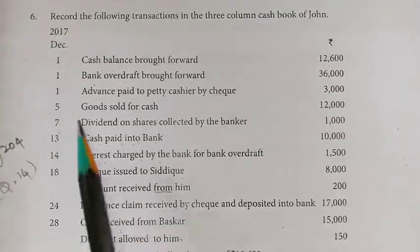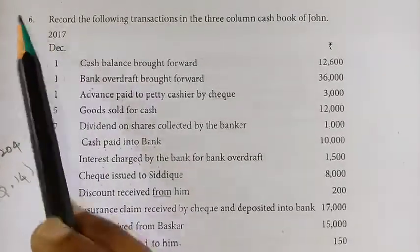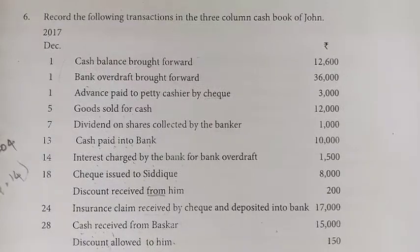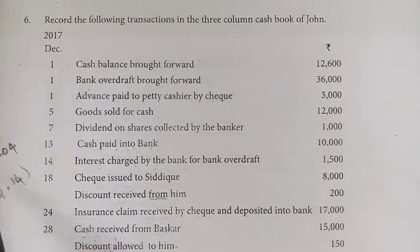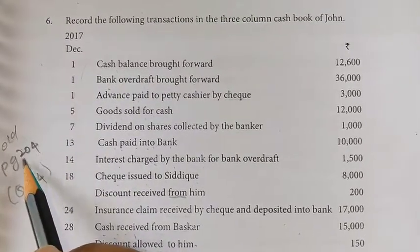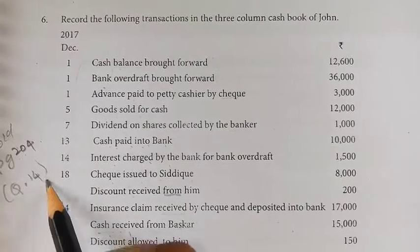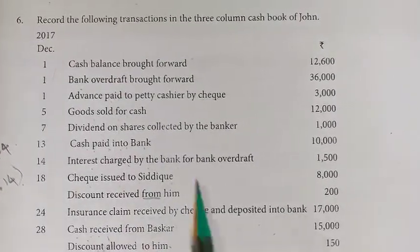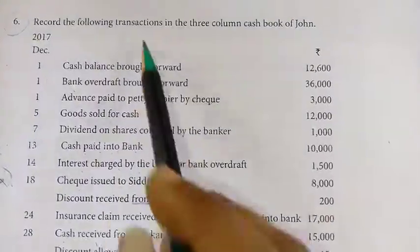We continue with the next sum — sixth sum. It is on page number 149 in the old textbook, page number 204, question number 14. In the new textbook it is question number 6.